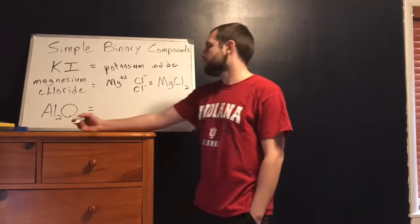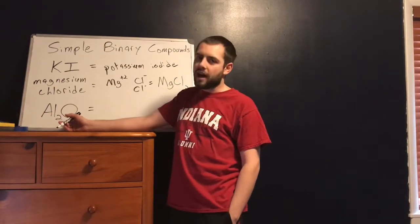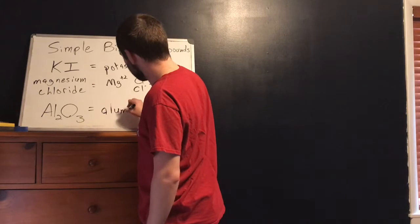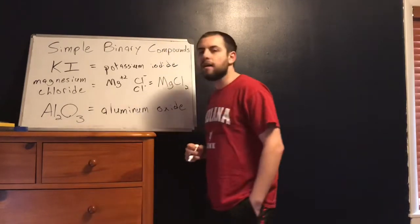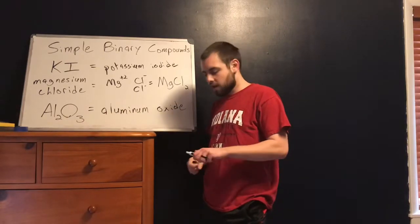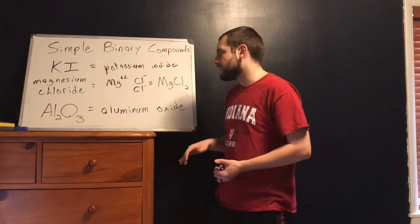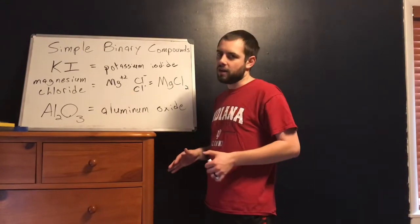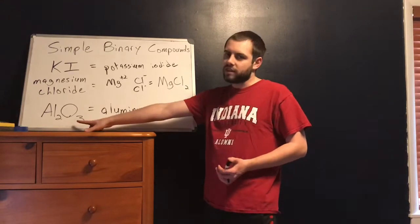And then this last one: aluminum is my cation and oxygen is my anion — but I end it in IDE, so aluminum oxide. I don't have to say anything about two aluminums or three oxygens. Aluminum and oxygen will always bond this way to make aluminum oxide. I don't have to say dialuminum trioxide or aluminum three oxide — this is just aluminum oxide. It'll only balance in this one specific way, so this is specific enough.